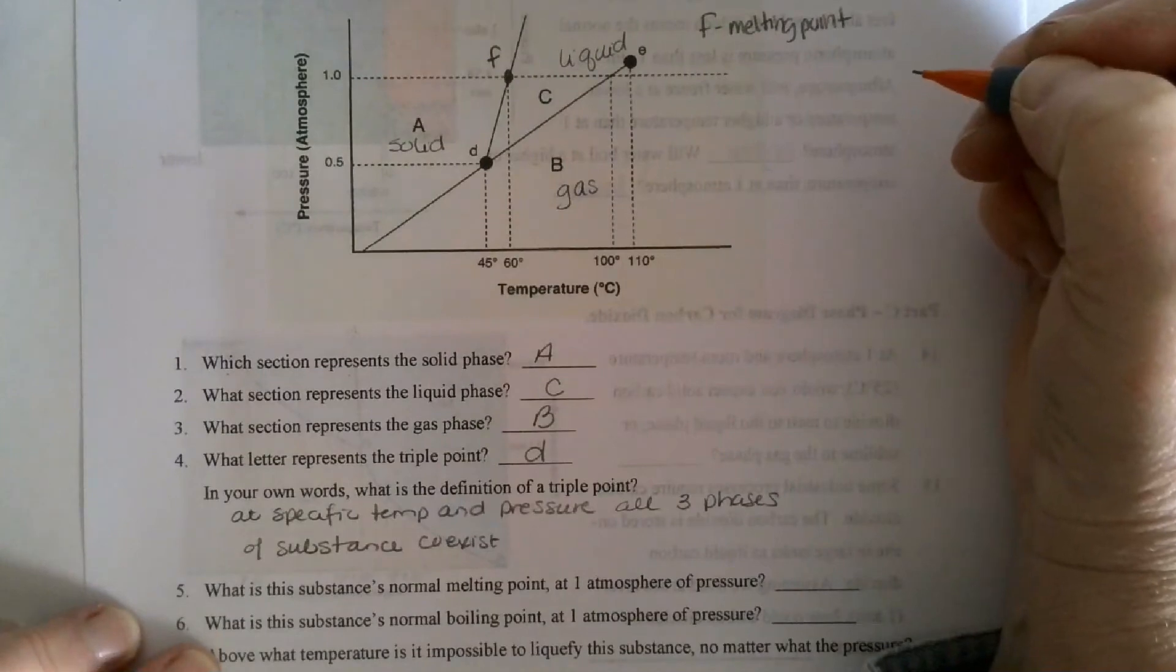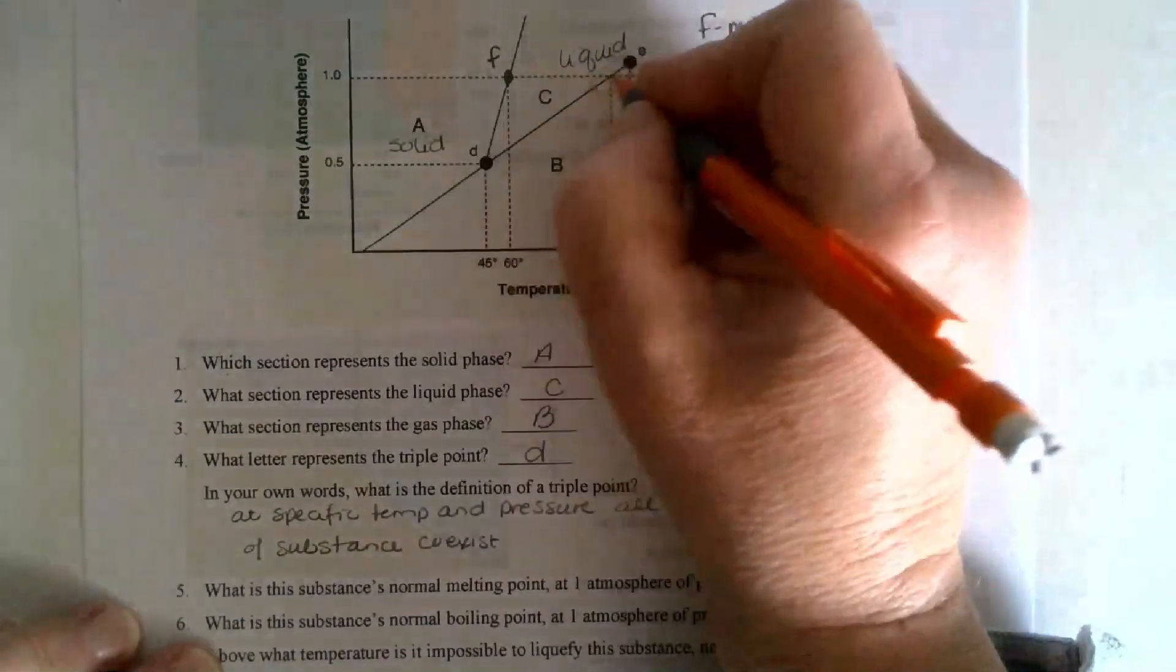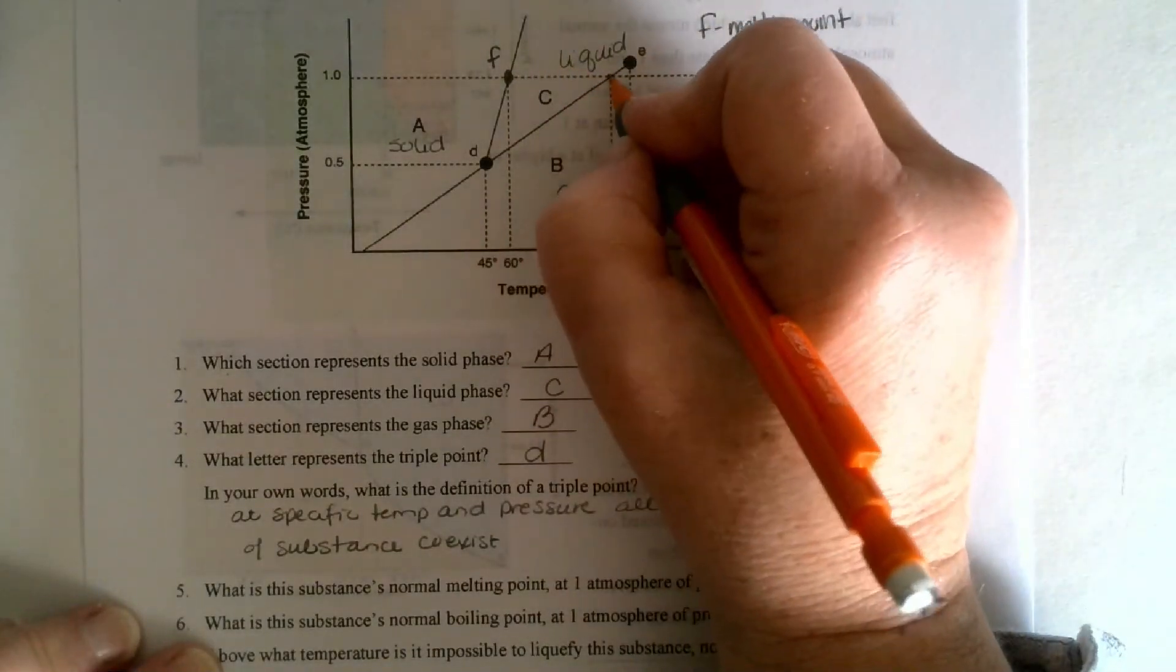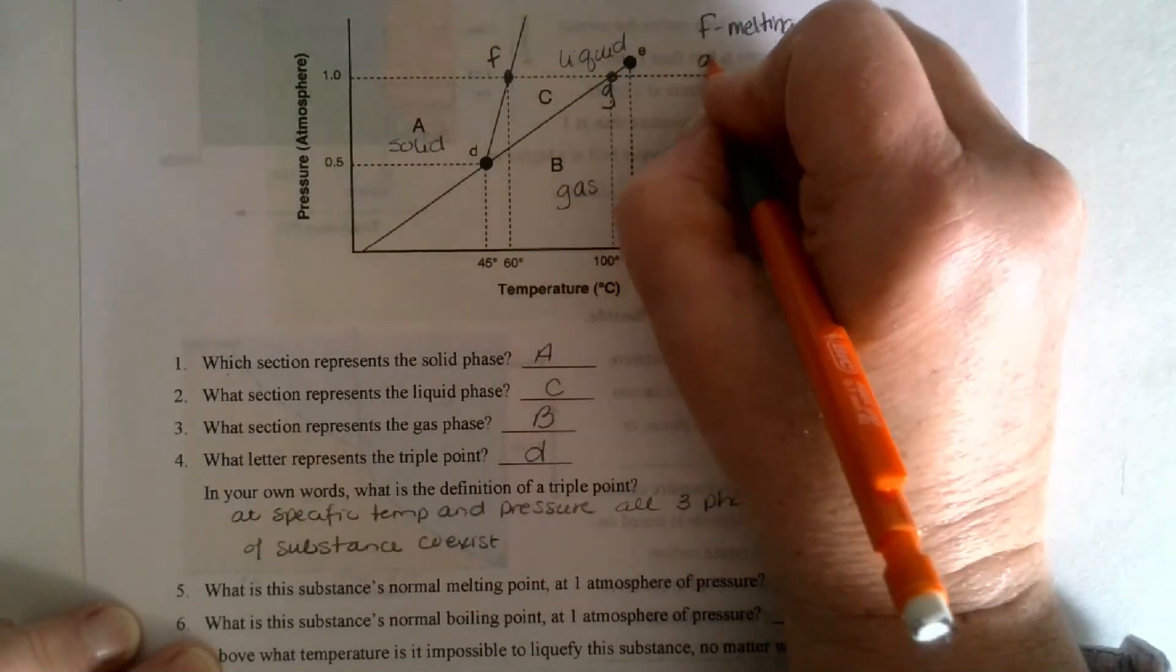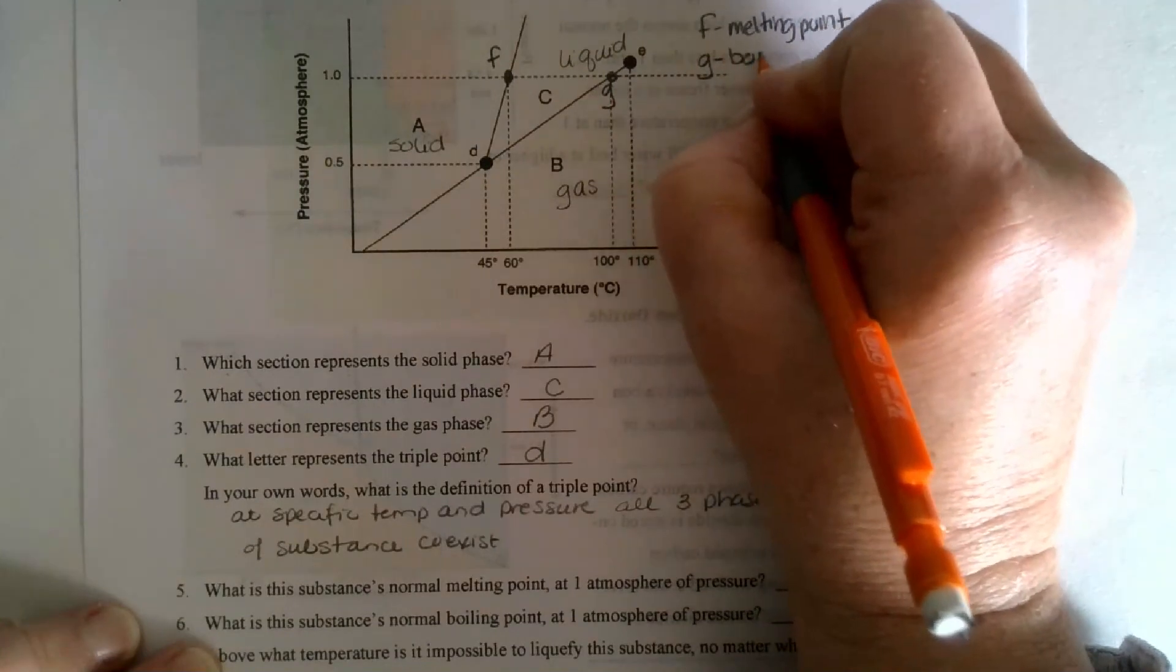What is the substance's normal boiling point at one atmosphere? So we go across right here. And we'll call that G. G is boiling point.